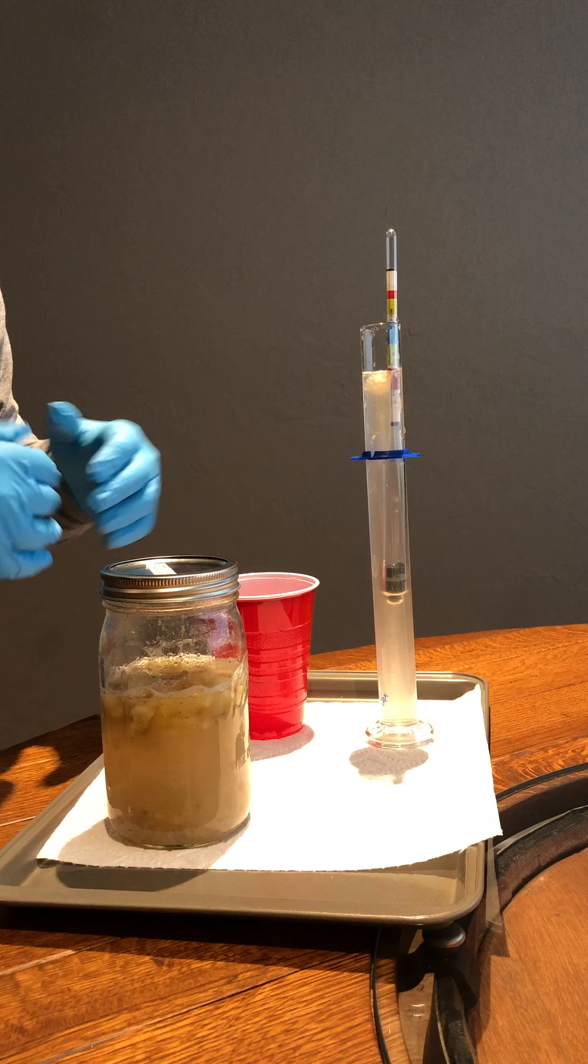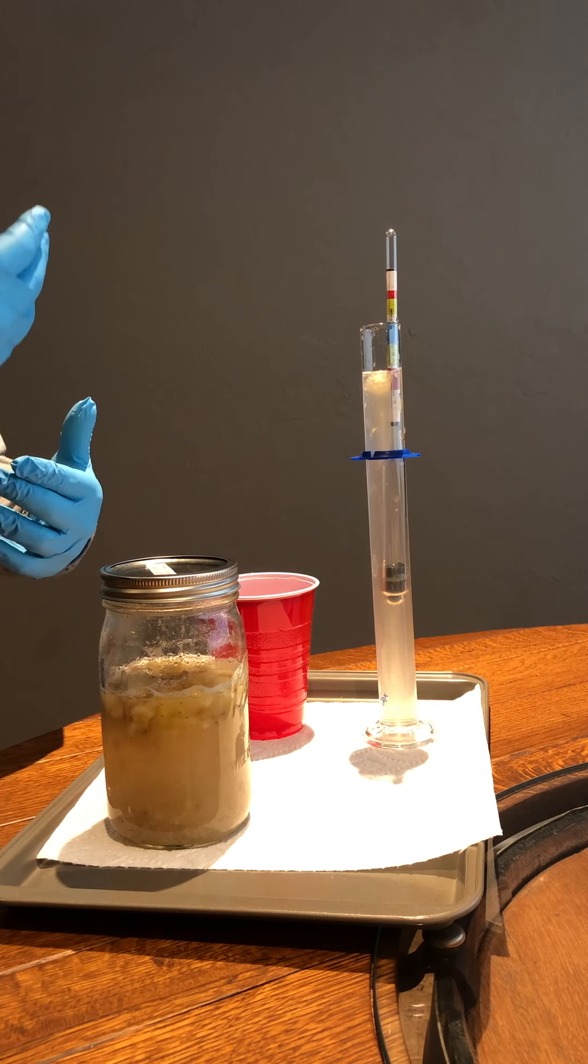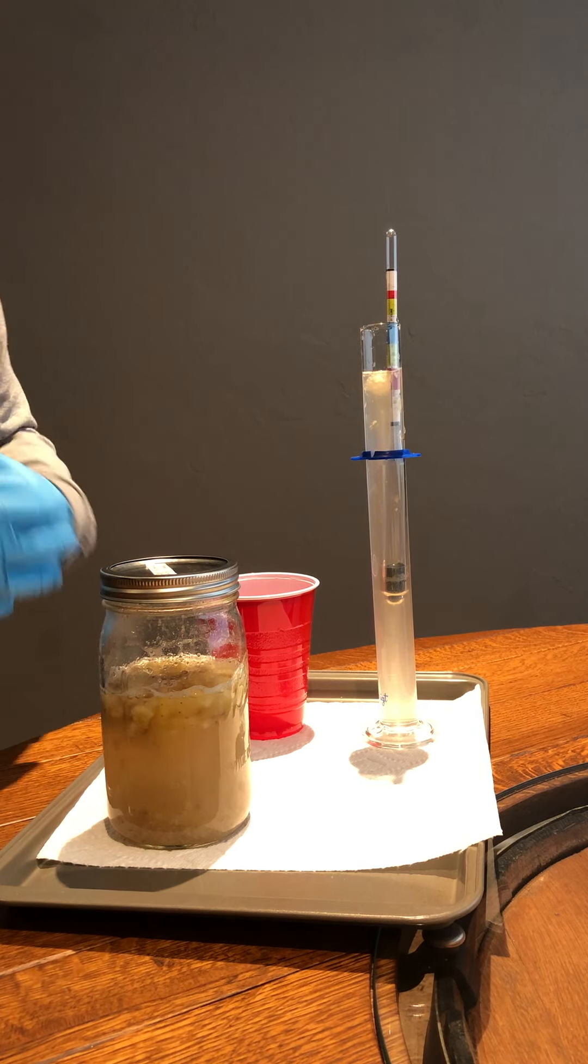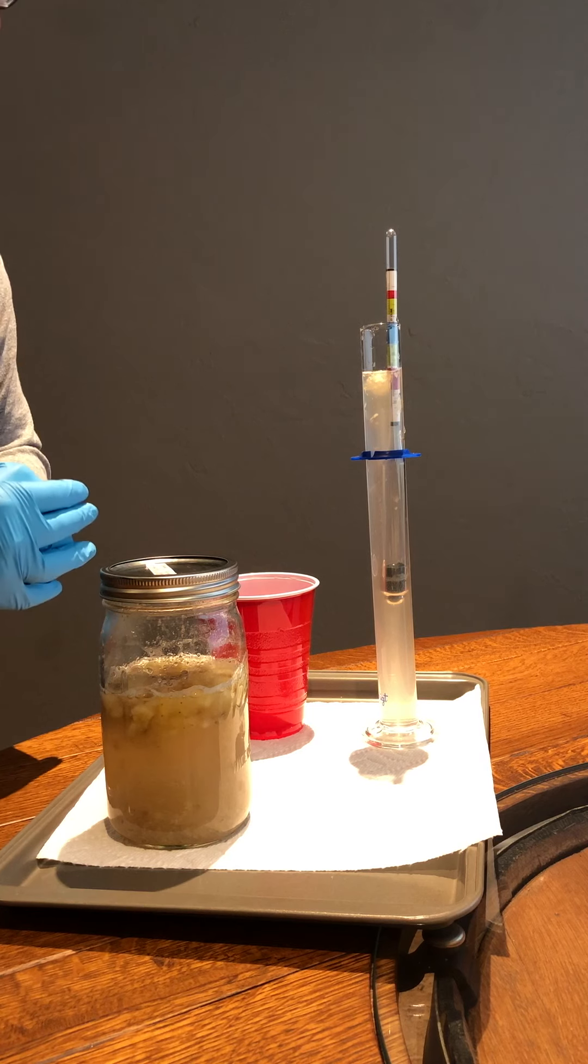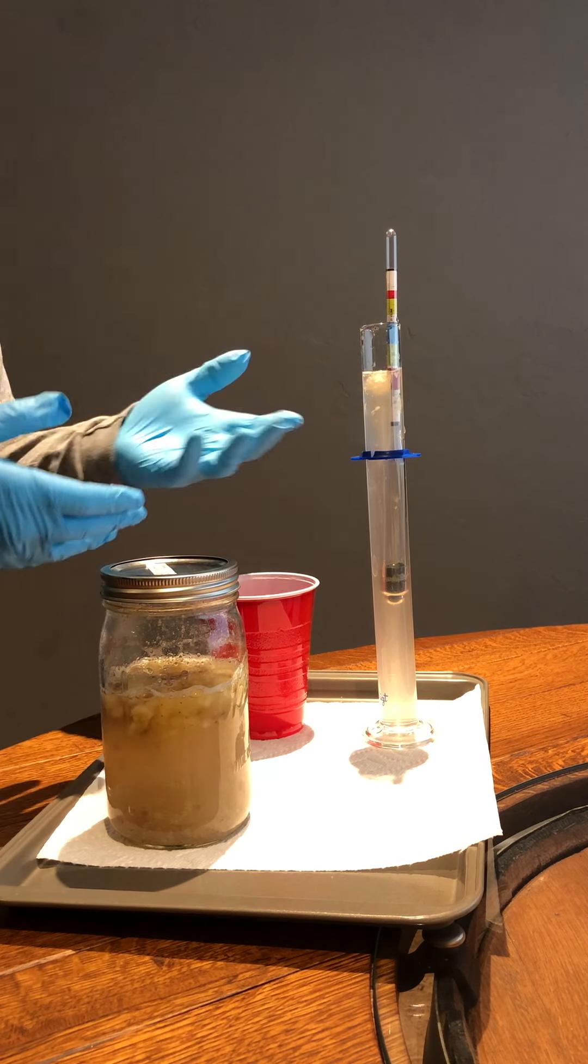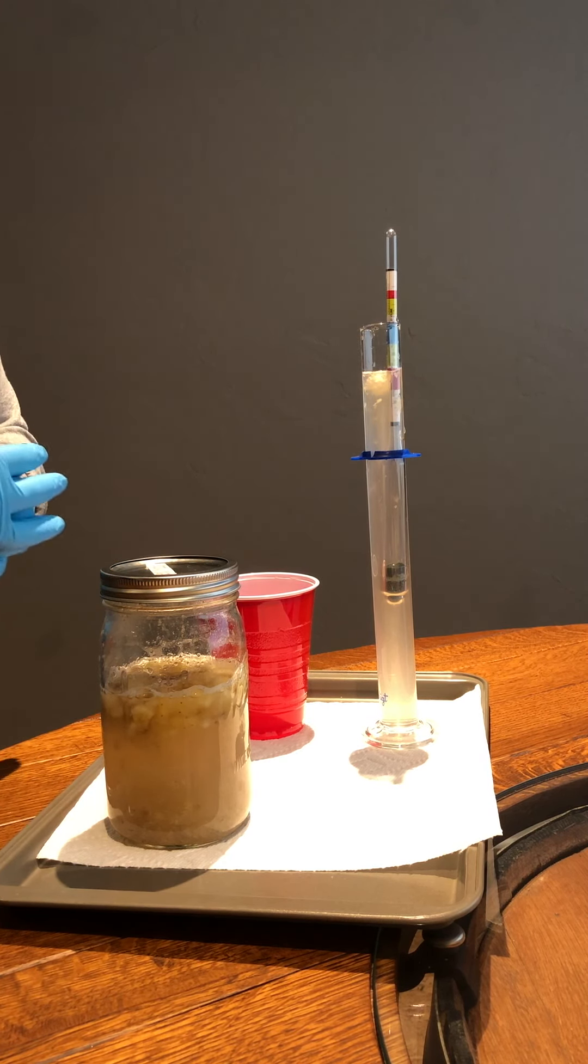We're just using natural wild type yeast that will be naturally found on and in the banana. And the fermentation process then just gives us this result. So 0.8 is the alcohol by volume reading after about eight days of fermentation.